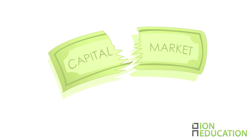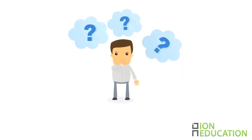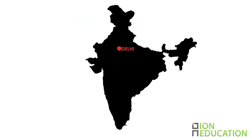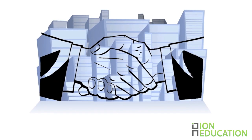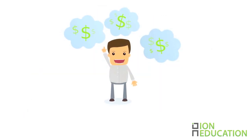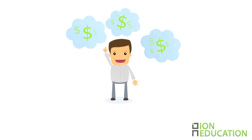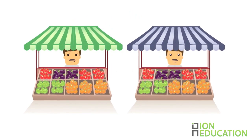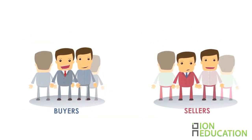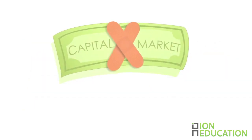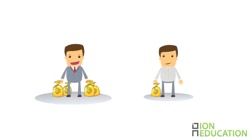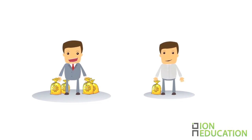Let's start by breaking the word up. If we say the word capital, what's the first thing that comes to your mind? We are talking from a business point of view. For most of us, it's going to be money, and that's correct. Money is the primary base for the word capital. And markets refer to a place where products and services are bought and sold between buyers and sellers.